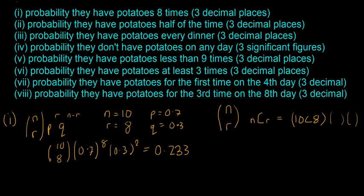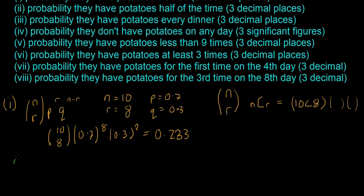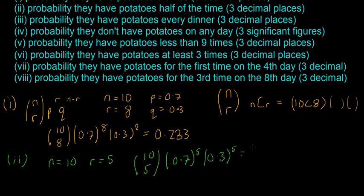So now we'll move on to question 2. Part 2 is that they have potatoes half of the time. So it's the same formula. In this case n is still equal to 10, and this time r is only equal to 5, so it'll be 5 successes. And then the p and q as I have here are going to stay the same. They're going to be the same for the whole question because the probability of getting potatoes doesn't change. So in this case it's going to be 10 choose 5, and it's going to be 0.7 to the power of 5 and 0.3 to the power of 5. And this is equal to 0.103.